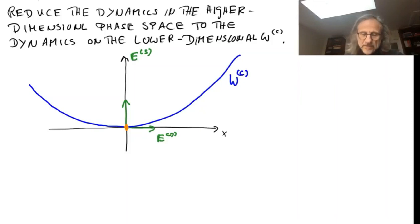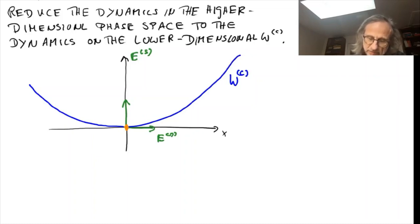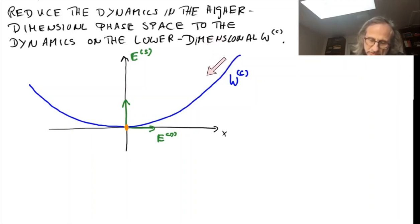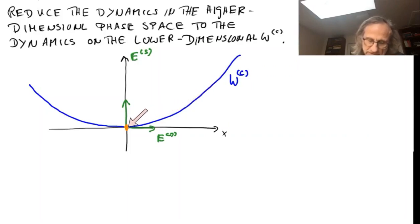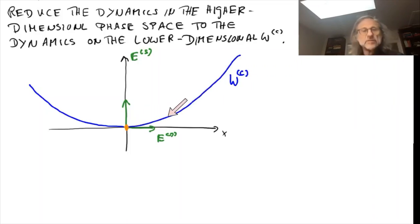As the simulations had suggested, and as the center manifold theorem tells us, this manifold is attractive. If we start with general initial conditions, after some initial transient time the trajectory will converge down towards the center manifold, and then evolve on the center manifold on a relatively slow timescale. That's the dynamics we want to capture.